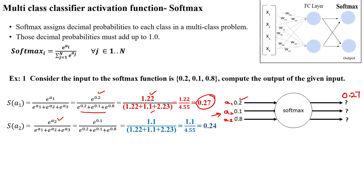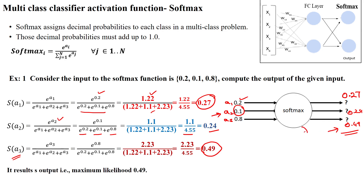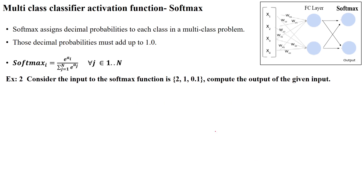For the second input a2 equal to 0.1, substituting into e to the power a2 divided by e to the power a1 plus e to the power a2 plus e to the power a3, the denominator is 4.55 and we get the value 0.24. For the third input we get 0.49. We take the maximum probable value, which is 0.49, as the predicted class of this softmax function.